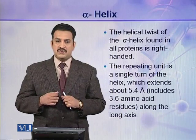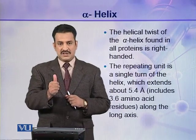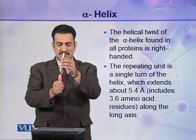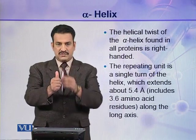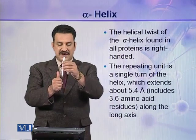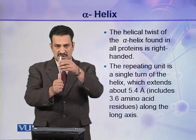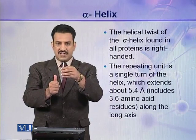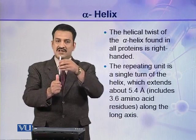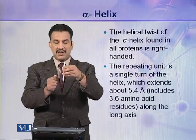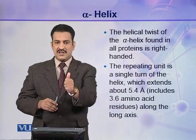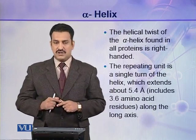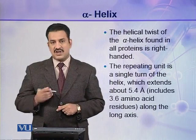If we use the right hand with the thumb as the axis of the helix, and the fingers coiled round this thumb, similarly our right-handed helix is coiled in that direction. If it is left-handed, it is coiled in the opposite direction. So the alpha helix in proteins is right-handed.